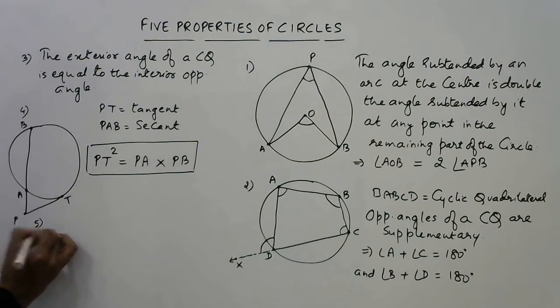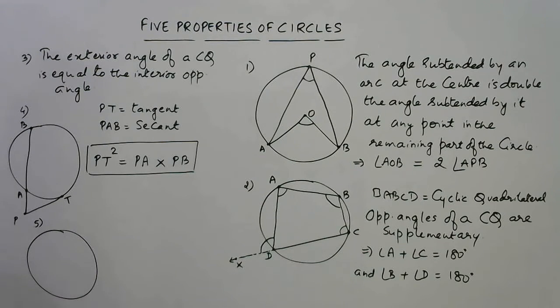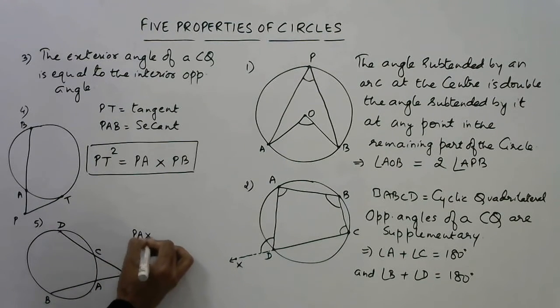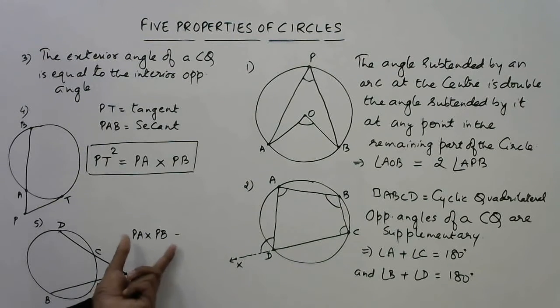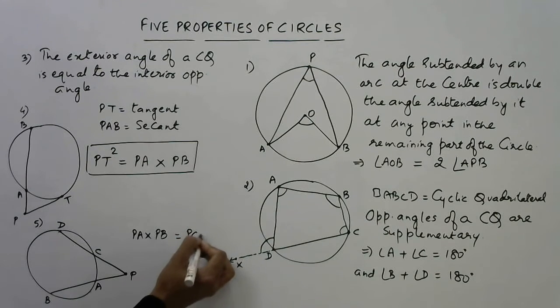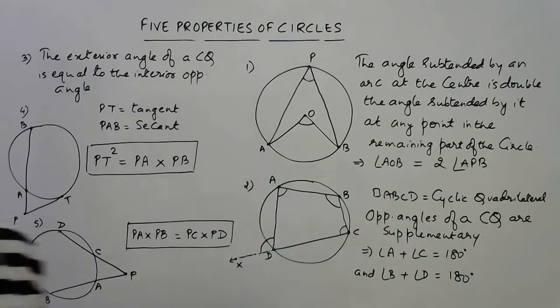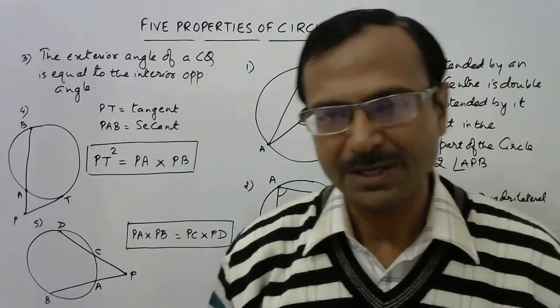Finally, in the fifth property, we have a circle and a point P outside the circle from where we are drawing two secants. PAB is one of the secants and PCD is the other secant. Whenever we have two secants, PA × PB = PC × PD. This is the fifth property which you must know before starting to solve questions based on circles.